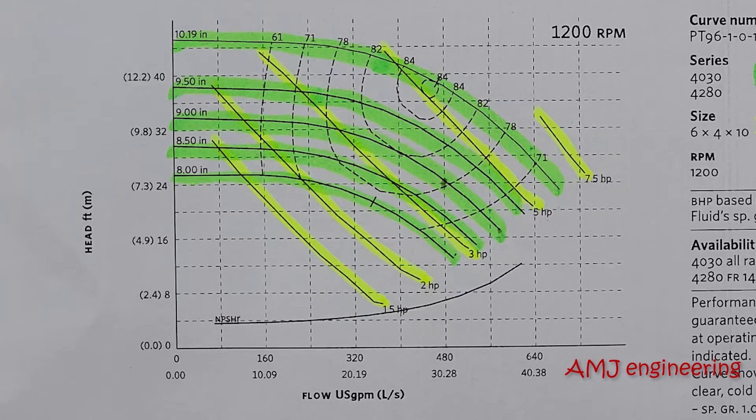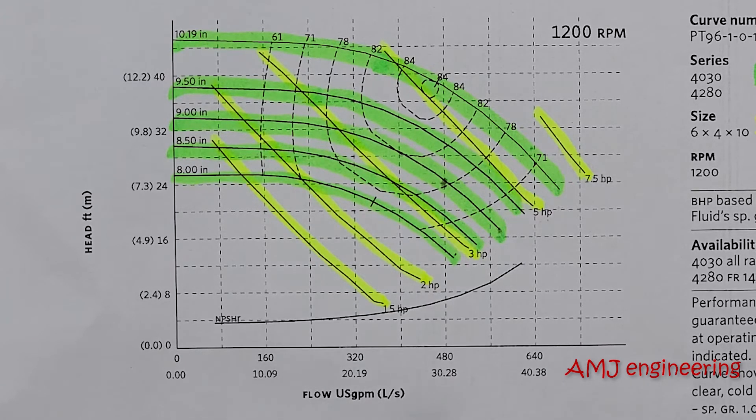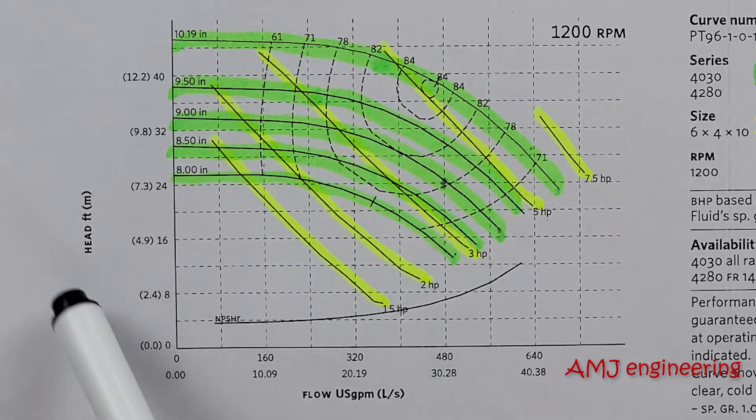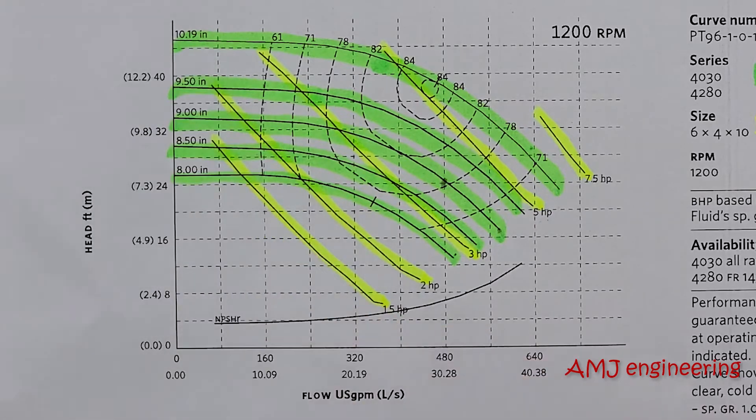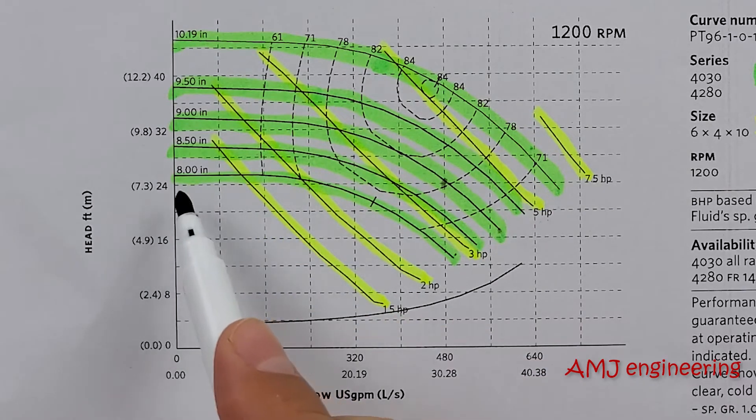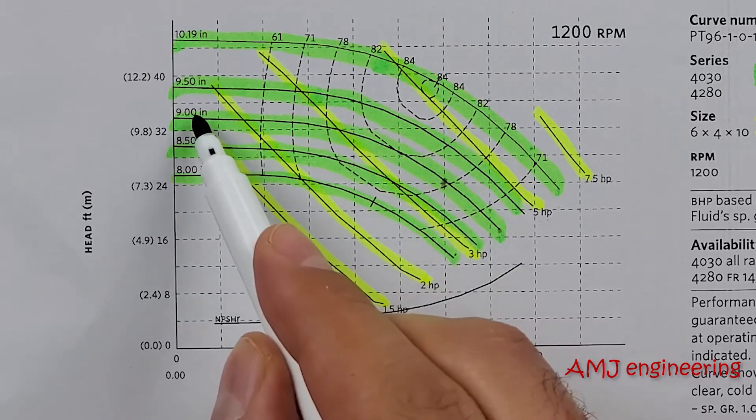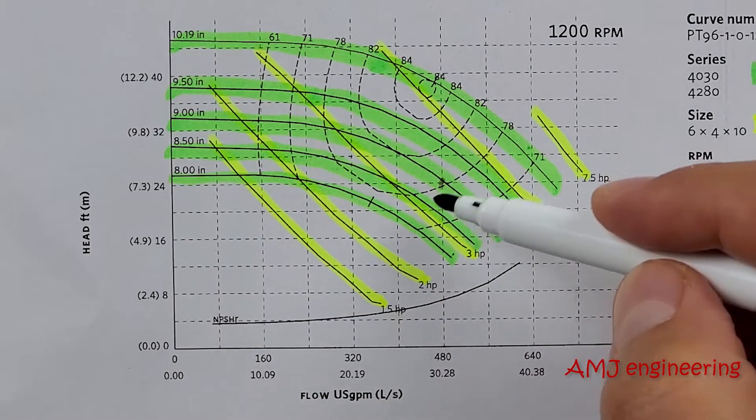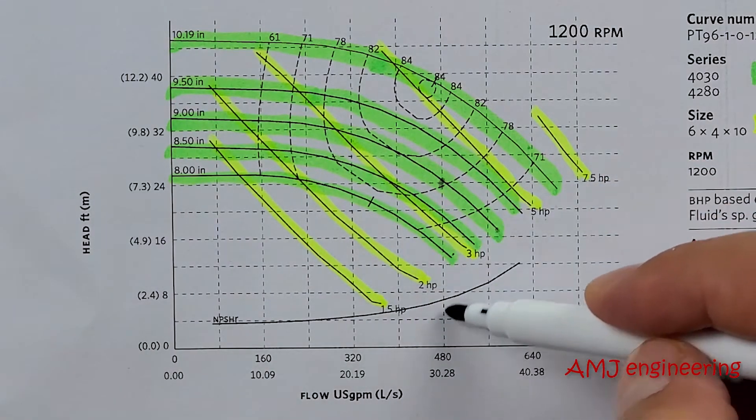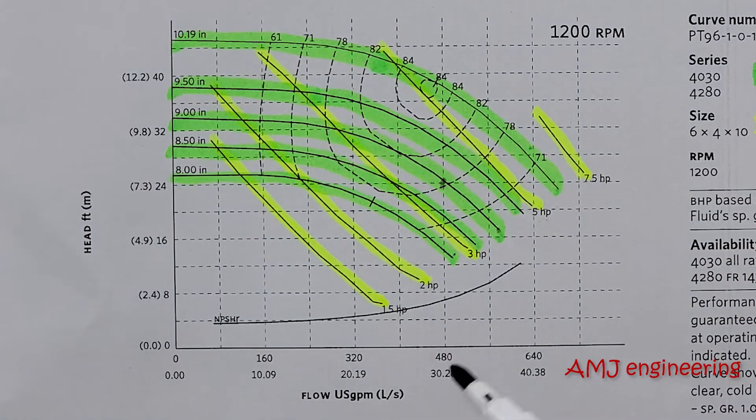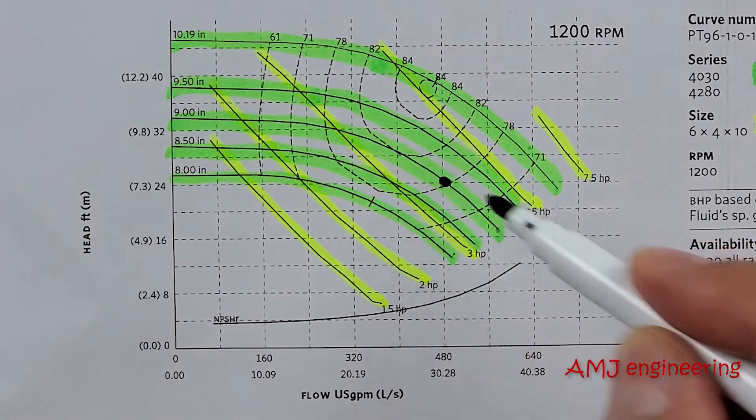Now to read these curves, flow is indicated on the X axis while head is indicated on the Y axis. In this example, let's say if we are pumping against a head of 24 feet using an impeller size of 9 inches, we could pump at a rate of 480 US GPM.